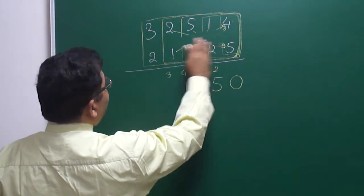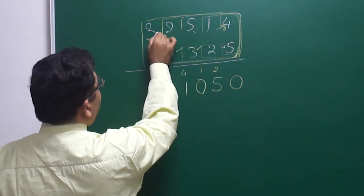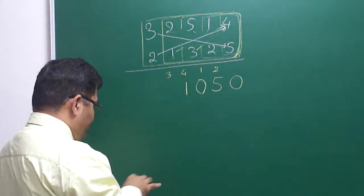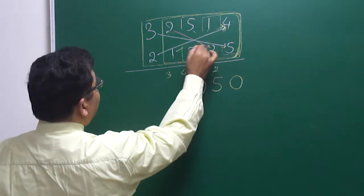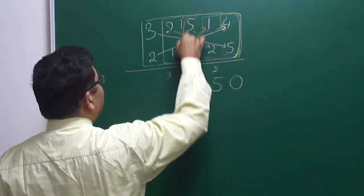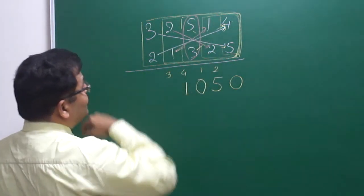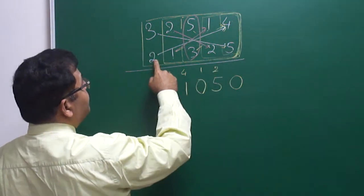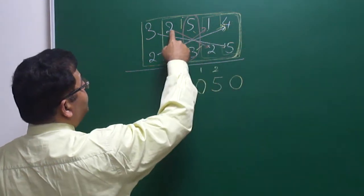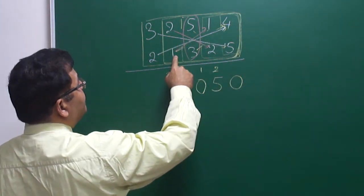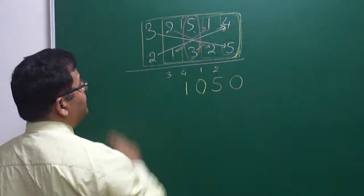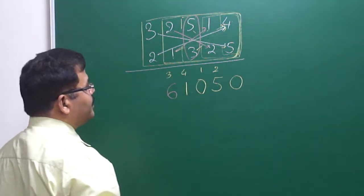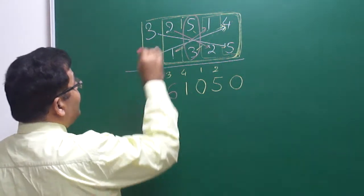Taking all five together, cross multiply all of them: 3 × 5 = 15, plus 8 = 23, plus 4 = 27, plus 1 = 28, plus 15 = 43, plus 3 carry = 46, so write 6, carry 4.